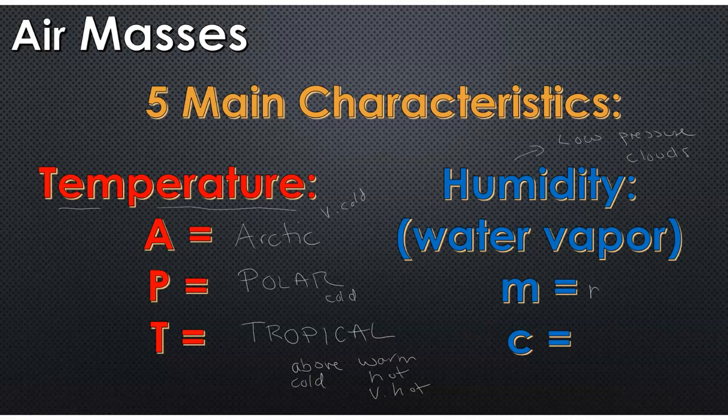M stands for maritime, which is ocean or water. So this air would potentially contain a lot of water, whereas the C stands for continental, which is land, which will contain less water, potentially.